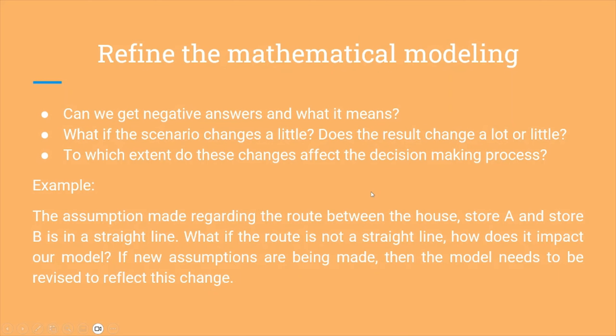Going forward, we need to refine the mathematical modeling. So what are the other forms of real-world interventions that can come into play? We need to make the mathematical formula more robust. For example, can we get a negative answer? If it gives a negative answer, what does it actually mean? It doesn't make sense if there's a negative value in the answer, so we need to take that into consideration.